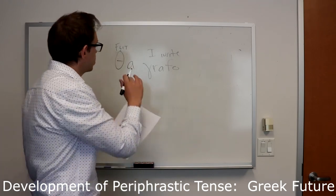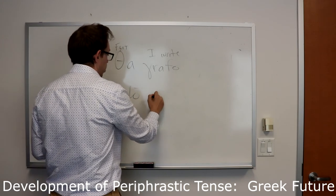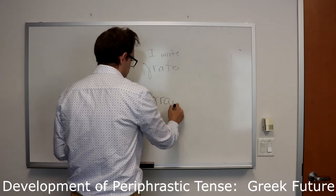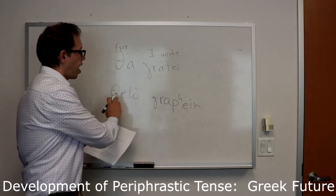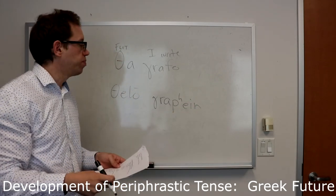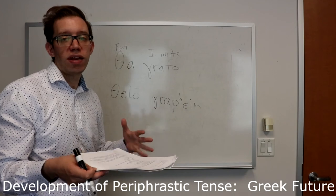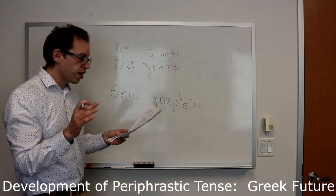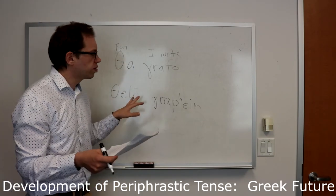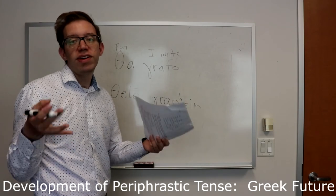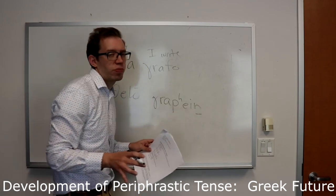Originally you would have said 'thelo graphein' — 'I want to write' — and that gave birth to 'tha grafo' meaning 'I will write,' with phonological change as well. Part of this was triggered by a sound change: final -n was being lost in infinitive forms. This gave rise to ambiguity because the third person singular form ending in -a and the infinitive, which used to end in -ain, now both ended the same way. So 'I want to write' sounded exactly like 'I want, he writes.'